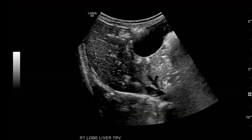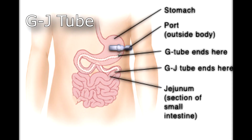This is a case ordered for intussusception. The patient had abdominal distension and also had a gastrojejunostomy tube, so they were looking for intussusception around the tube.